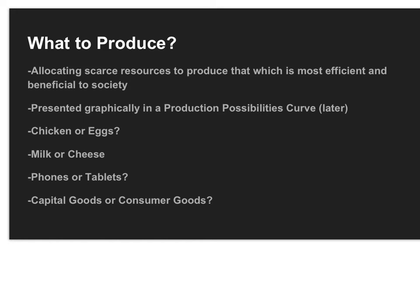So the idea is, if I have some chickens, what am I going to produce? Am I going to make chicken meat, or am I going to allow them to produce eggs? If I have a cow, am I going to use that to produce milk or cheese? If I'm a phone manufacturer or technology company, I'm deciding should I make more phones or more tablets? And as a society, we might say, do we want to produce more capital goods so that we can produce more in the future, or more consumer goods so that it makes consumers happier today?